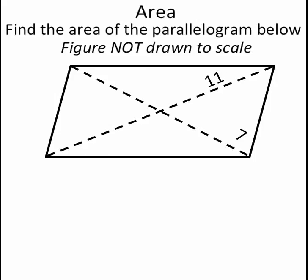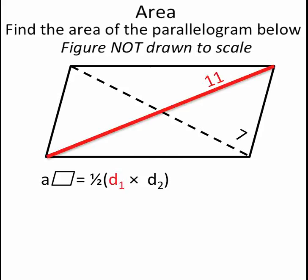The second formula for the area of a parallelogram is 1 half times the product of its diagonals, or 1 half times diagonal 1 times diagonal 2. And in this problem, we have values for both diagonal 1 and diagonal 2.